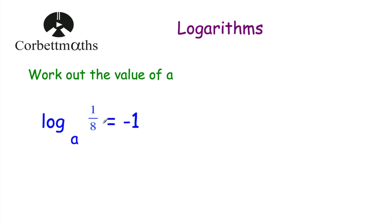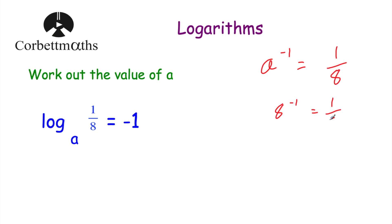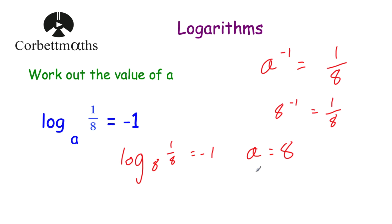Question 6: work out the value of a. We have log to base a of one eighth is equal to negative 1. So a to the power of negative 1 equals one eighth. Raising to the power of negative 1 means putting 1 over the number. So a to the power negative 1 equals one eighth means a must be 8, because 8 to the power of negative 1 is 1 over 8, which is one eighth. So a equals 8. Log to base 8 of one eighth equals negative 1.